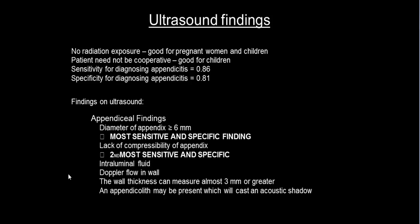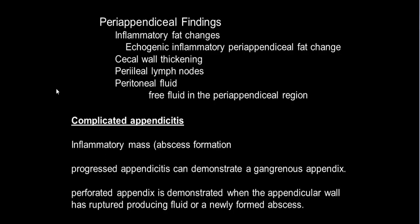An appendicolith may be present and will cast an acoustic shadow. Peri-appendiceal ultrasound findings include inflammatory fatty changes presenting as echogenic fat, cecal wall thickening, peri-appendiceal lymph nodes, and peri-appendiceal fluid seen as free fluid in the peri-appendiceal region. In complicated appendicitis, inflammatory mass and abscess formation may be seen.